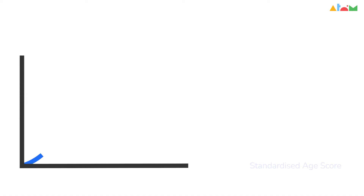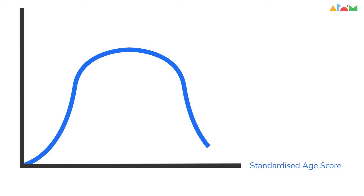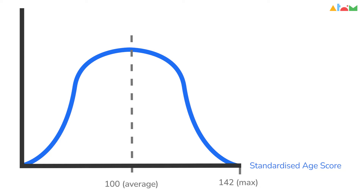There is no set adjustment for age difference in standardised age scores. Your child's result is mapped onto a normal distribution curve, where a standardised age score of 100 places them at exactly average for their year group. The maximum your child can achieve is up to 142, which would place them in the top 1% of children taking that test.